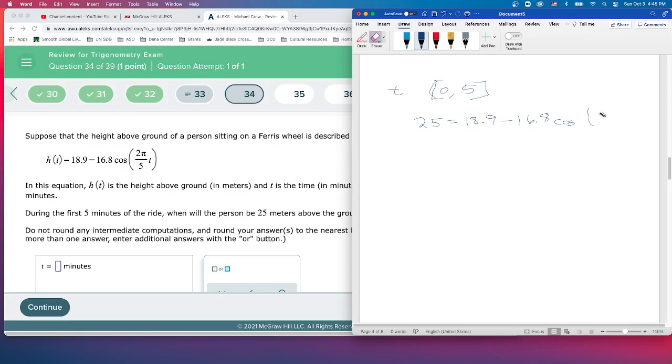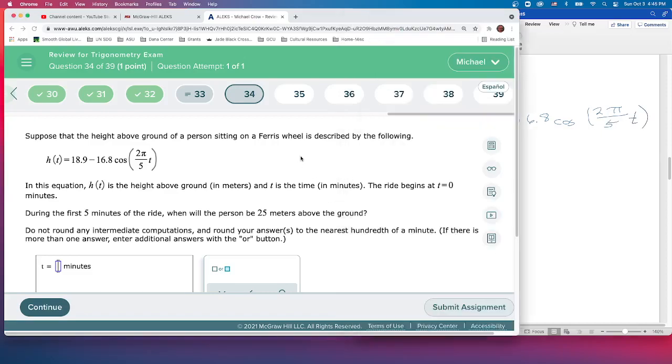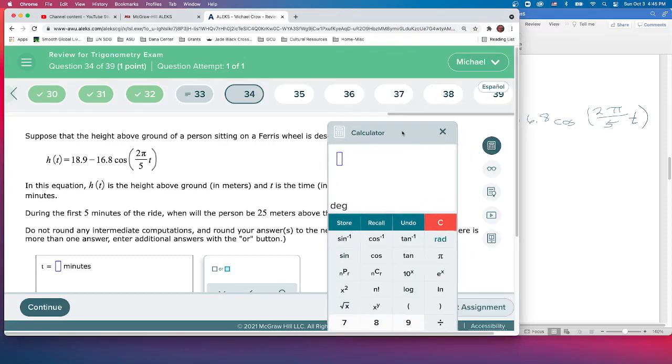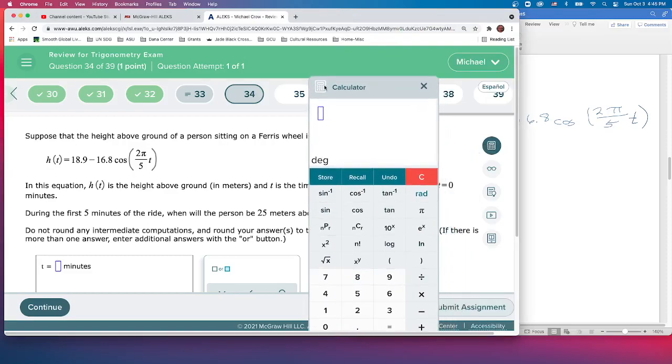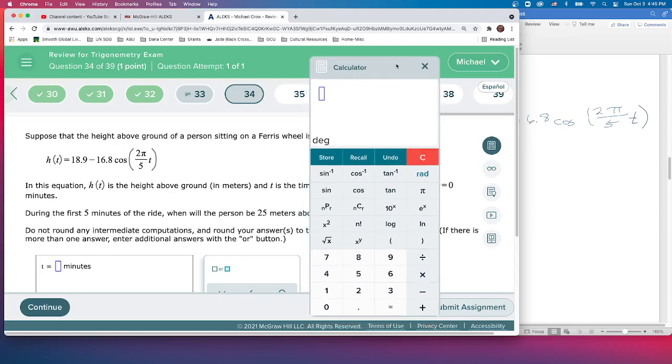We'll do 18.9 minus 16.8 cosine 2 pi. Let's see if they give us the graphing calculator. I don't know if they ever use the graphing calculator here. This is really actually perfect one because they want it to the nearest, they want a decimal answer. So that's what a calculator is good for.